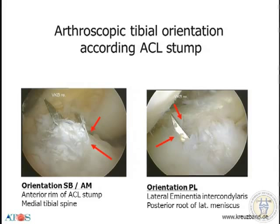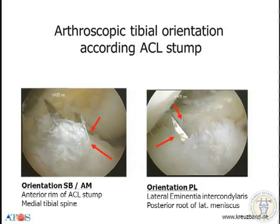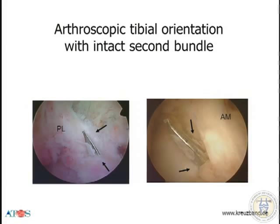In trans-tibial times we have been more posterior, but now we come more anterior with the bone tunnel. On the medial side we can use the bony medial tibial spine for orientation, and for the PL bundle in the back, the lateral eminentia intercondylaris and the posterior root of the lateral meniscus, which comes in just posterior to the PL insertion. It's easier if we still have one bundle intact — if the PL bundle is intact, we just put our bone tunnel in front on the tibial side for the AM, and vice versa. We can also use the soft tissue for orientation.